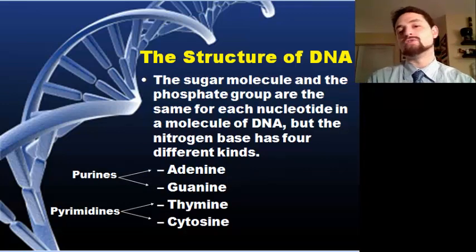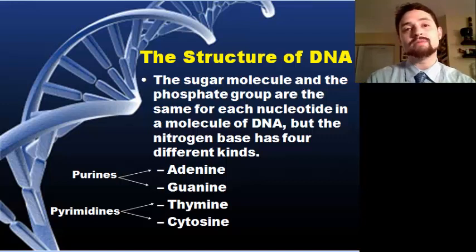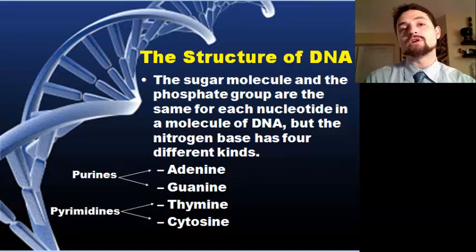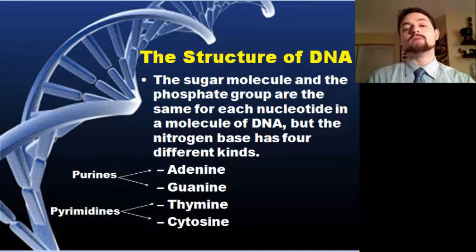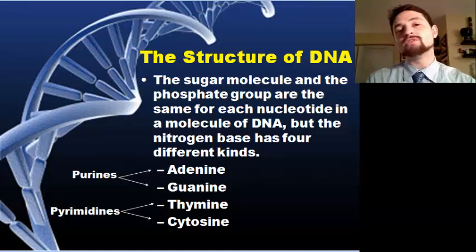The sugar molecule and the phosphate group are the same for each nucleotide — it's always the same. If you're looking at DNA then you're talking about deoxyribose as your sugar; if you're talking about RNA then you're talking about ribose as your sugar. But if you're looking at a molecule of DNA, the sugar and the phosphate are always the same.